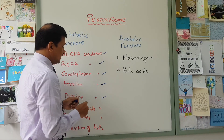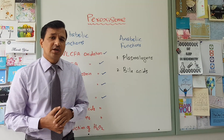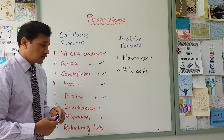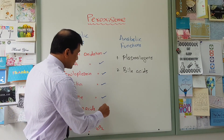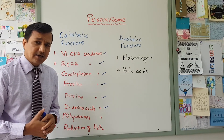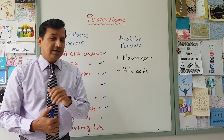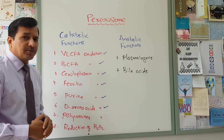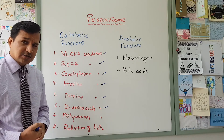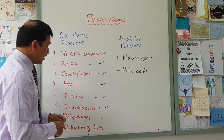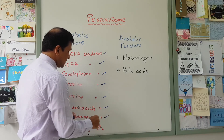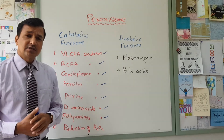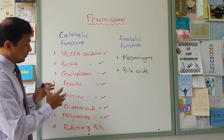Purine catabolism also occurs in the peroxisome — purines are catabolized to produce uric acid, and uric acid synthesis takes place in the peroxisome. Additionally, D-amino acid oxidation occurs here; while most amino acids are of the L-type, some D-amino acids like D-aspartate are oxidized by D-amino acid oxidases present in the peroxisome. Polyamines, which are positively charged molecules, are also oxidized in the peroxisome.